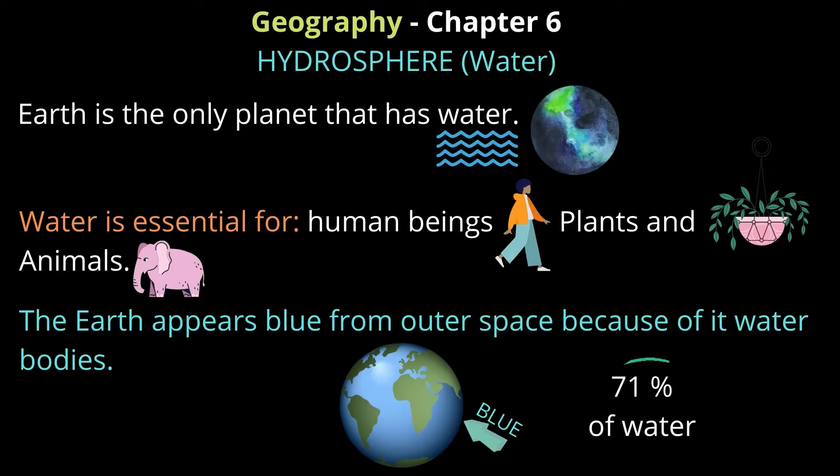Hello, we are going to learn Geography Chapter 6: Hydrosphere. Water - hydro means water. Out of the eight planets in the solar system, only Earth has water on it.